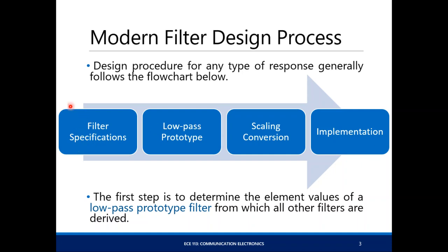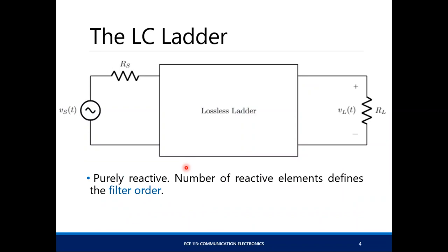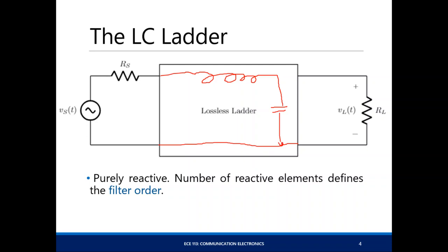Basically, you have to start at the specifications always. And the low-pass filter prototype — let's see how it is designed. Your modern passive filter is composed of a ladder, basically an inductance and capacitance ladder. The simplest implementation would be an inductance in series and a capacitance in parallel — a series inductance and a shunt capacitance. So it's an LC ladder. And to increase the order of the filter, you need to add more elements.